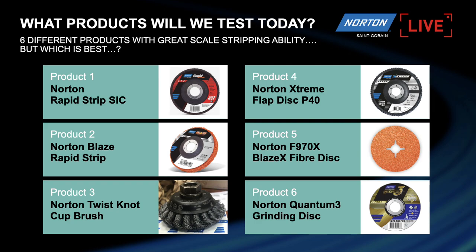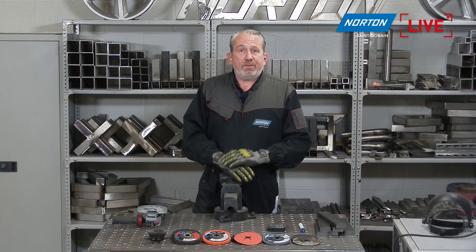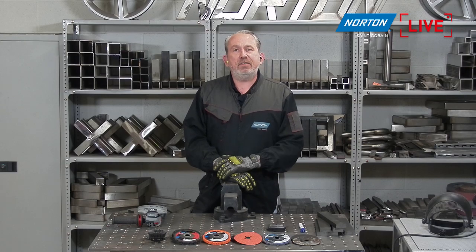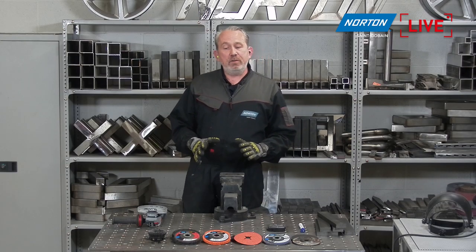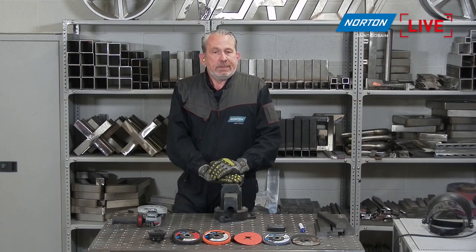Here we have the list of products we're going to go through today for scale removal — six in total. We've got grinding discs, rapid strip discs, wire brushes, fibre discs, and flap discs. These are the products commonly seen in the market for scale stripping, and we'll go through the features and benefits of each — why one is better than another for the job, the finish it leaves, and how it fits into the market. They will all do a reasonable job on scale, but some will be better depending on the end use and finish requirements.